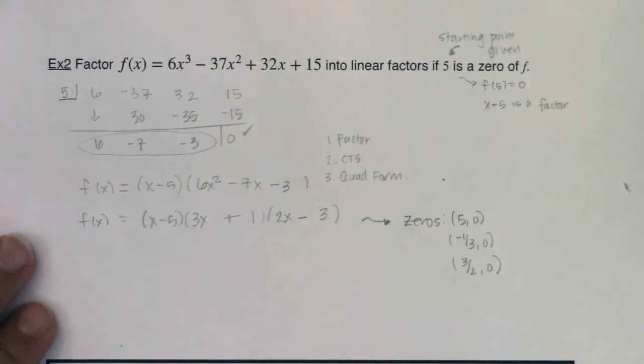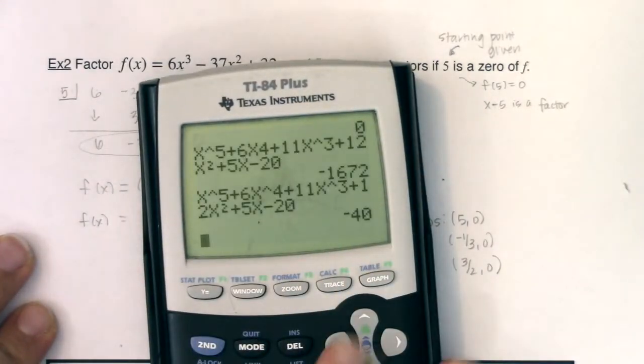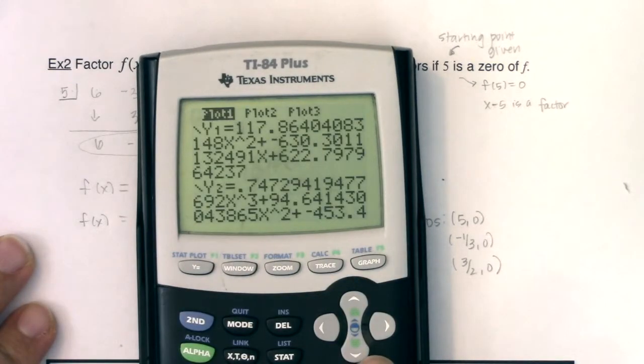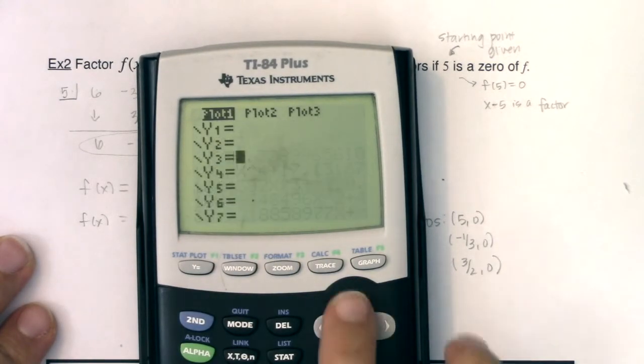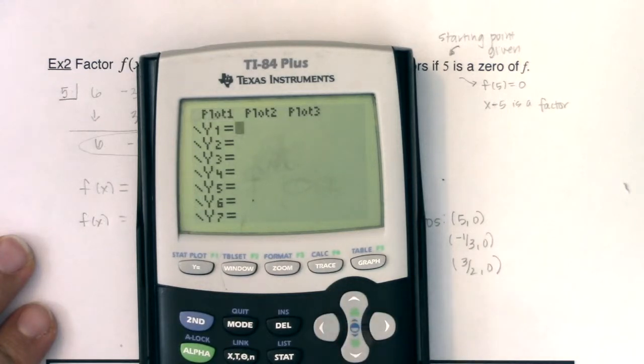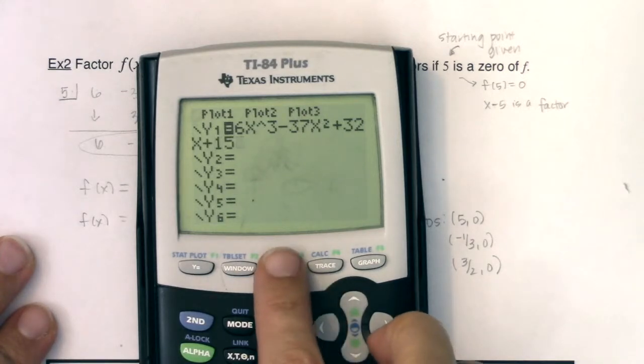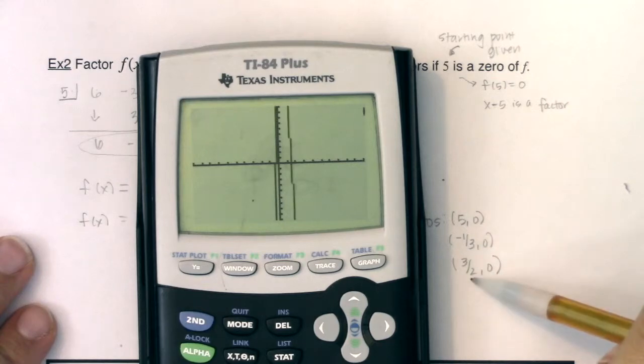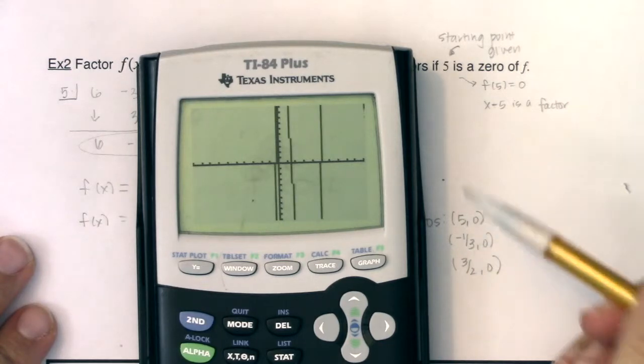So we ran through all of this. Now, again, I can always check this on my calculator, and I would really recommend getting into that habit. Let me clear this out, go to my y equals. We had some stats in there. Let me clear that all out. Turn my plot off. I could type in 6x³ - 37x² + 32x + 15. Let me hit zoom 6, and I should be able to see a bunch of zeros, and they're going to be pretty close to each other. Yeah, and you can see it.